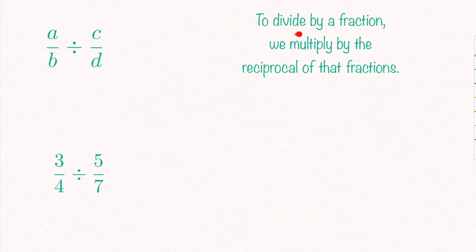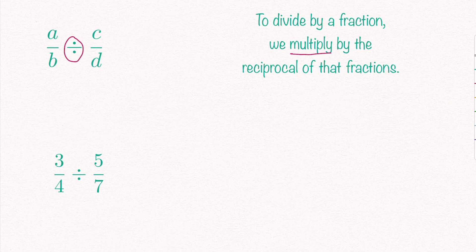To divide by a fraction, we need to multiply by the reciprocal of that fraction. So notice the word multiply here. When we are trying to divide, so there is a division sign, we will need to multiply once we find the reciprocal of the second fraction. So two important things here: we will need to find the reciprocal of the fraction and multiply.